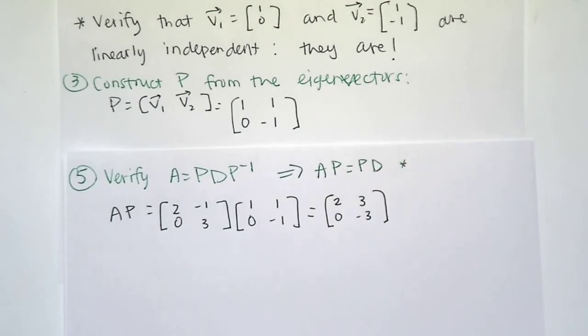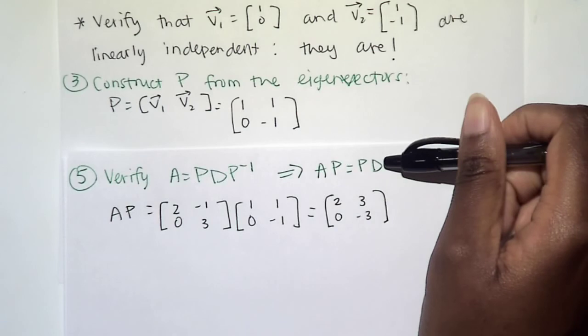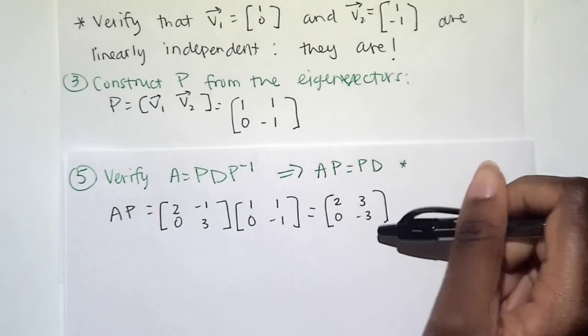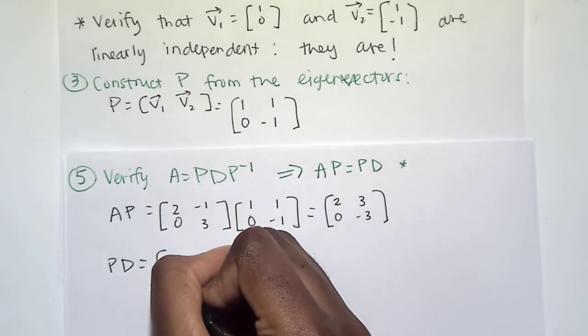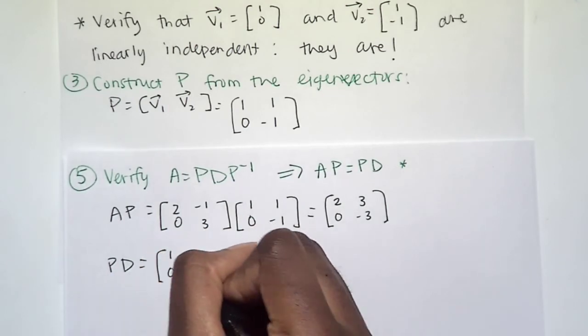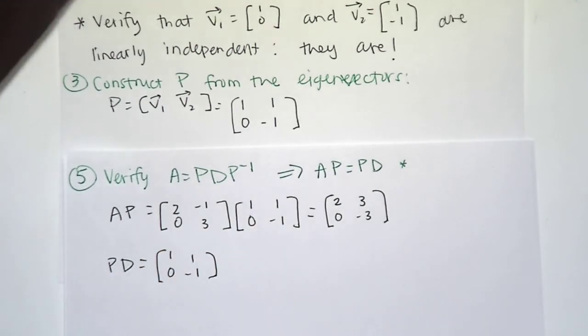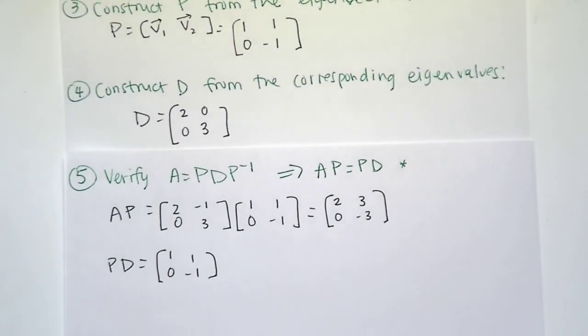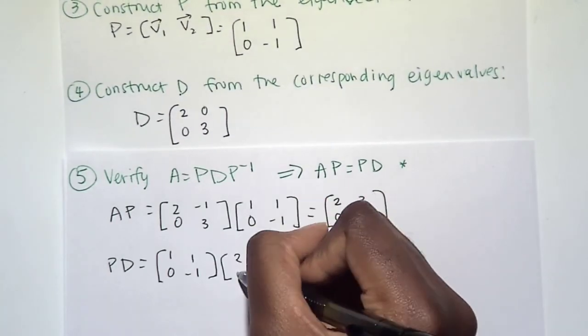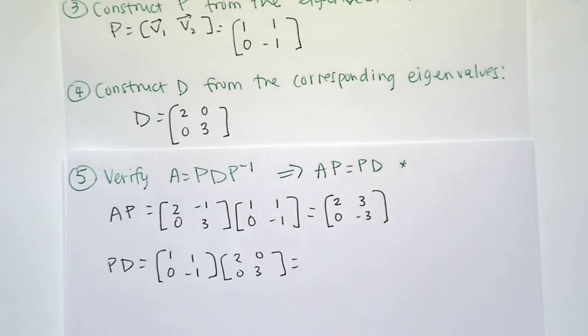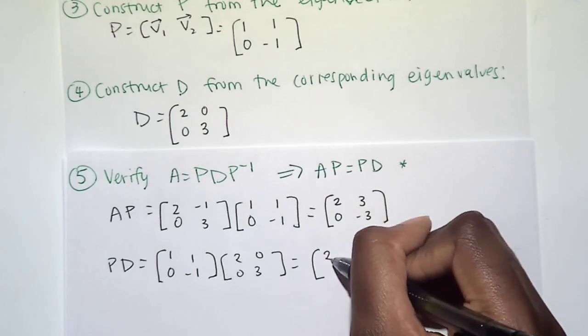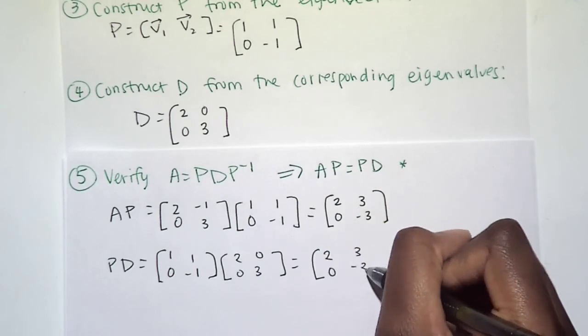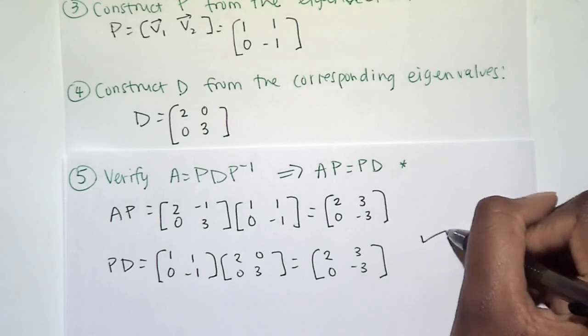So that's AP. Now I want to find PD and make sure that I get the same result. We got our P and then our D. And when I multiply these two, I get 2, 0, 3, negative 3. Same result. This checks out.